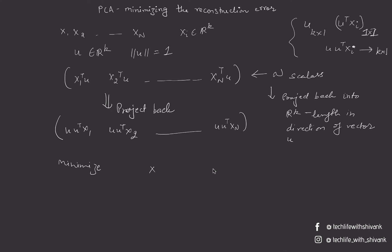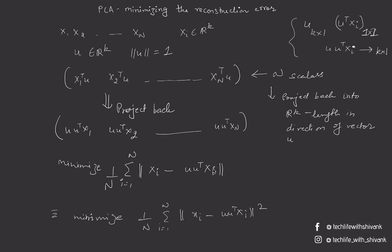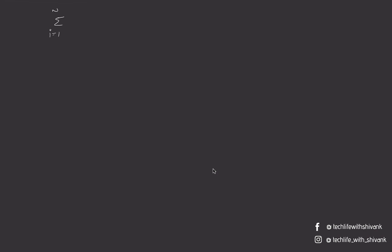The reconstruction error is the distance between the original and projected points: xi minus u*u^T*xi. The magnitude of this represents the error, and we minimize the average error over all data points. Minimizing this is equivalent to minimizing the square of this expression, so we can write it as (1/n) times the sum. Since 1/n is a constant, we can drop it and just minimize the sum.